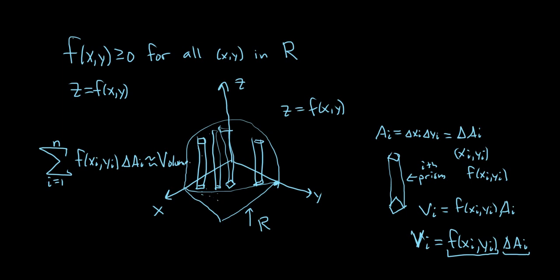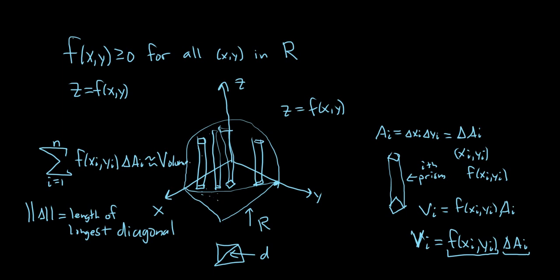So what we do is we take a limit like we always do. We let the norm, which is equal to the length of the longest diagonal of the n rectangles. If you let the length of the longest diagonal go to 0, then all the smaller ones go to 0. You get more and more rectangles, so you get more and more prisms. Eventually, you have infinitely many prisms covering your surface, your region, and it gives you the volume of your solid.